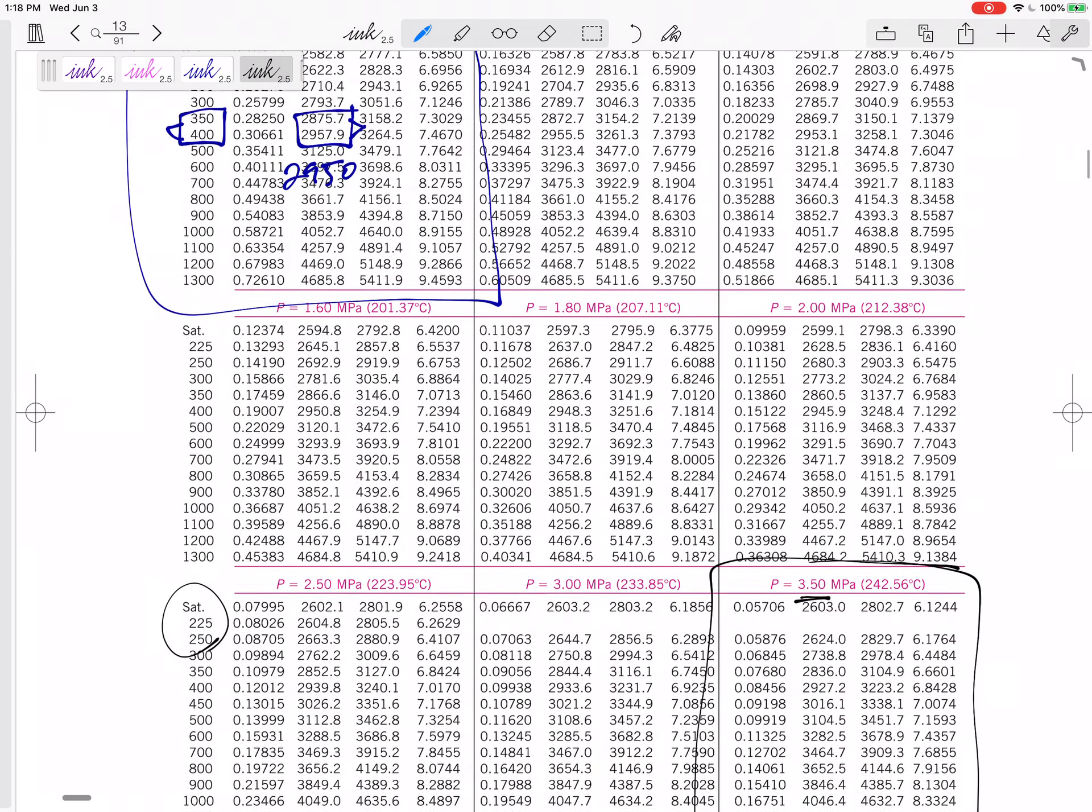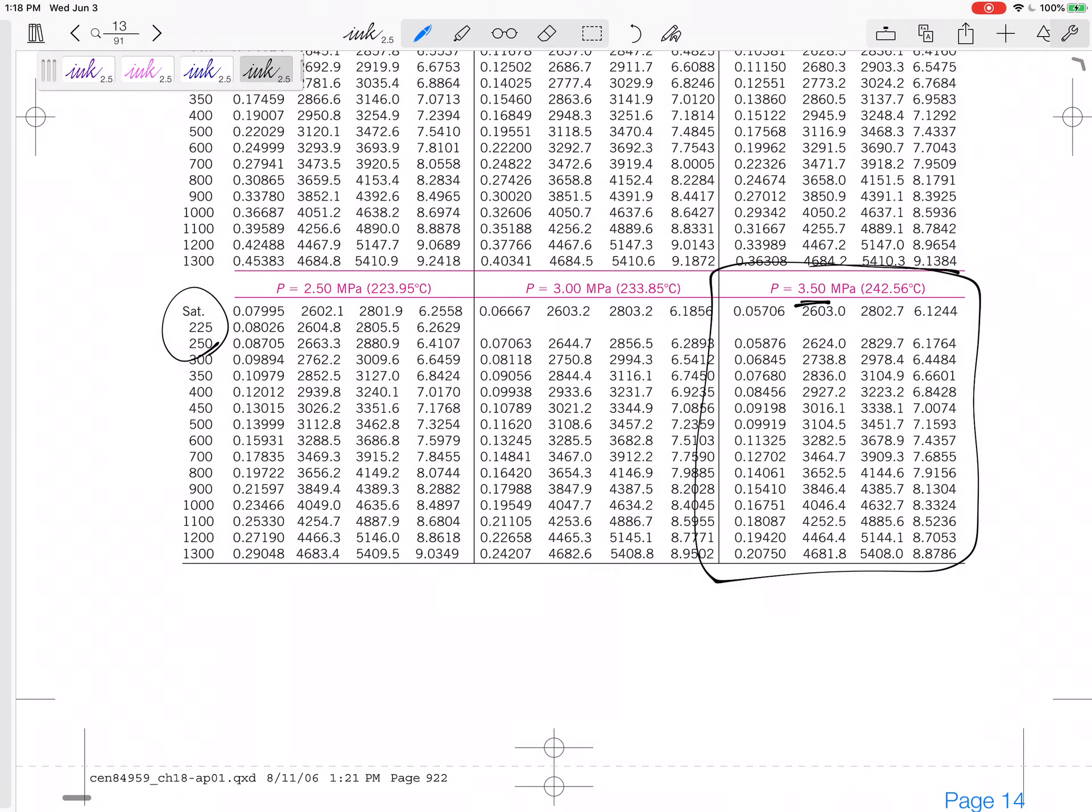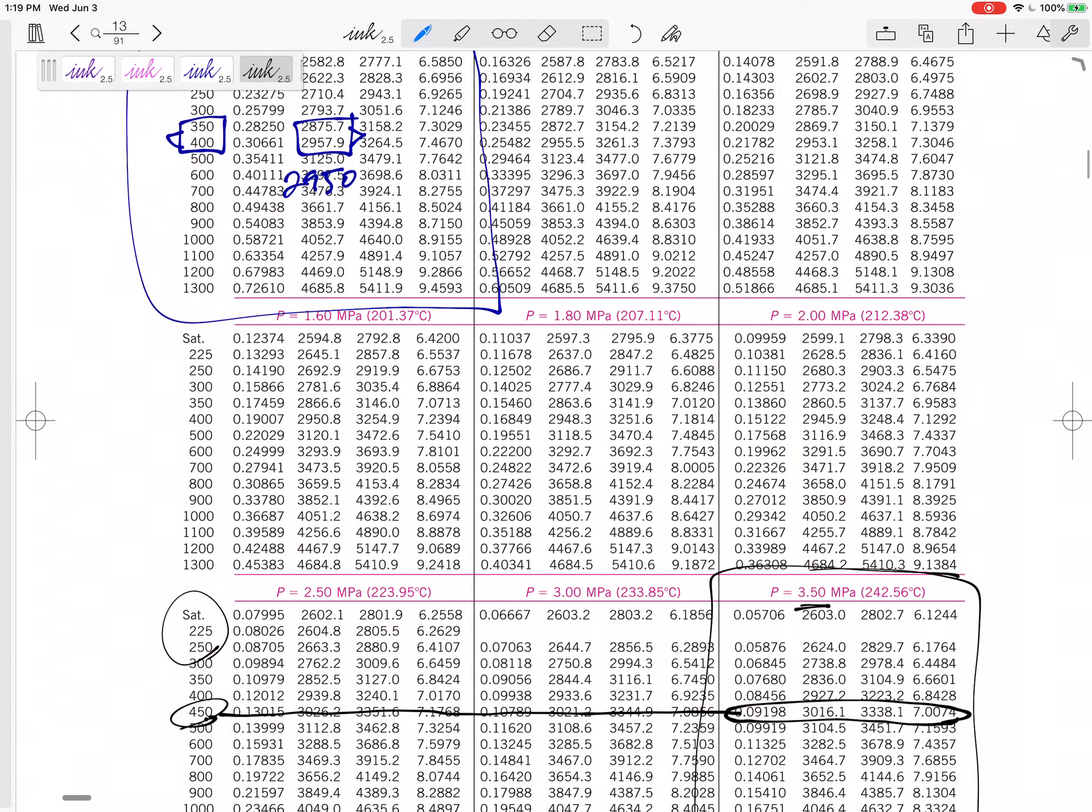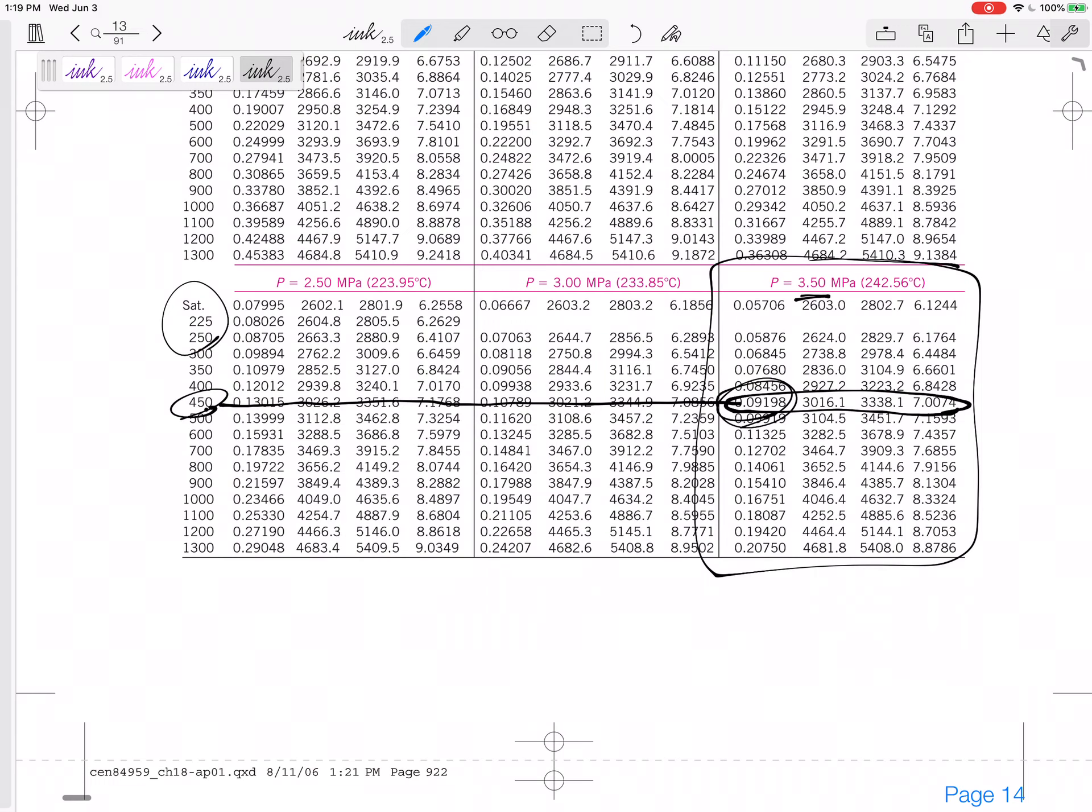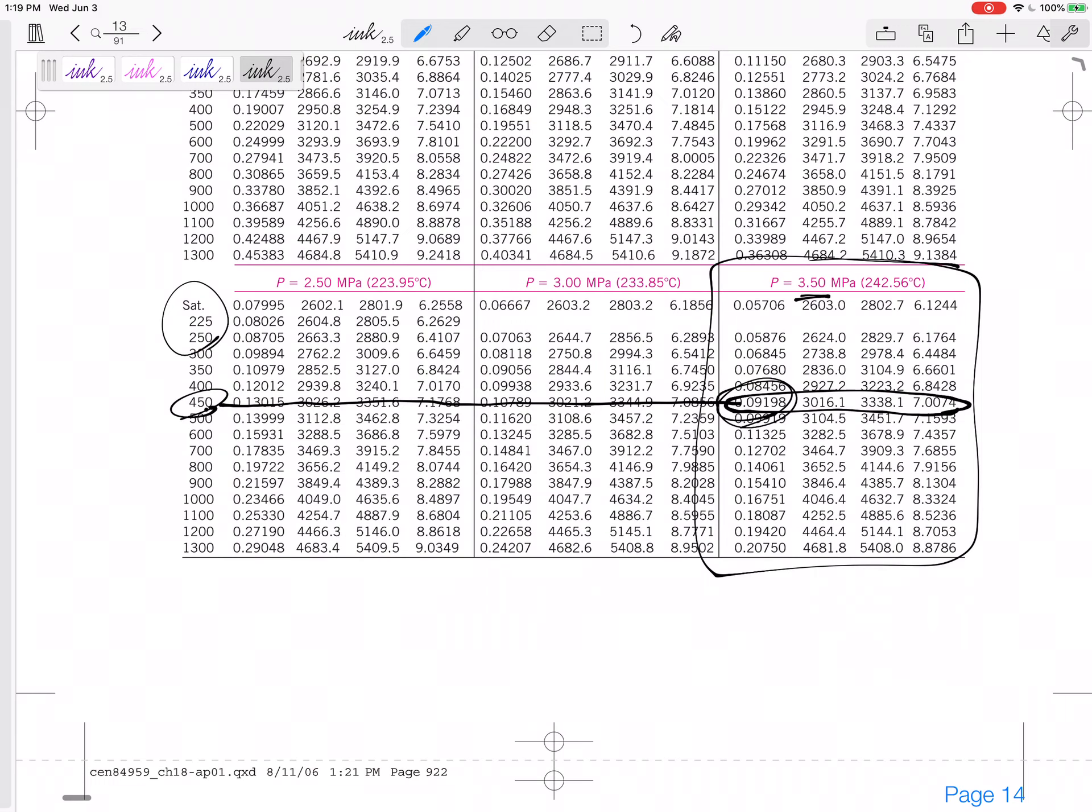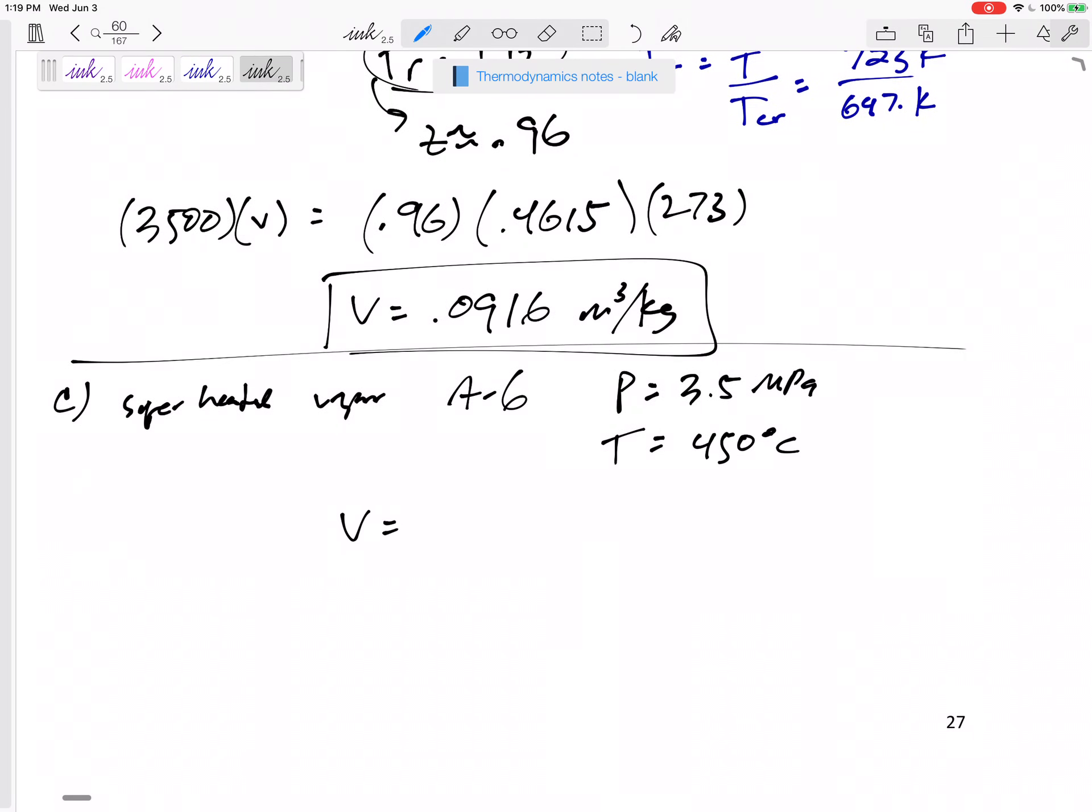Now these temperatures are in Celsius. So I don't need 723. I need 450. And here are any values I want. And if I want the specific volume, 0.09198. And we're going to say that is the most accurate, 0.09198 meters cubed per kilogram.